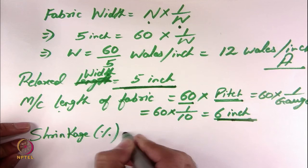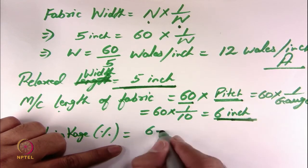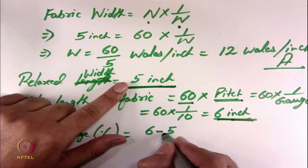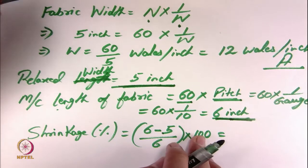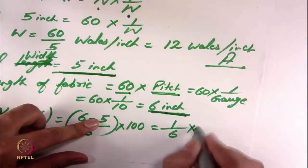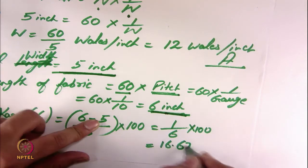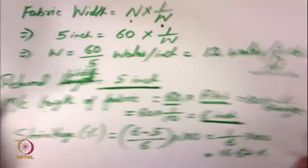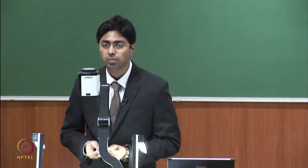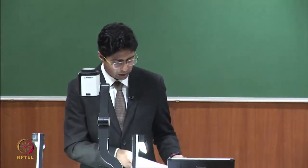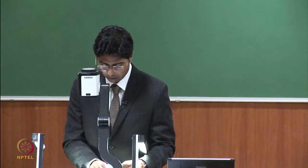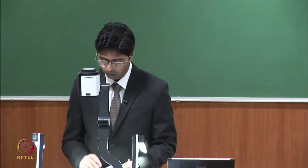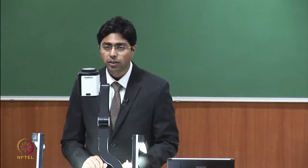Shrinkage percentage = (original length on machine − final length after relaxation) / original length × 100 = (6 − 5) / 6 × 100 = 1/6 × 100 = 16.67%. You can see how these relationships are so useful in understanding not only machine variables but also many physical and structural variables. In the next class, we are going to cover some new topics in knitting where some relationships can be useful in defining other fabric properties. Thank you very much for listening.